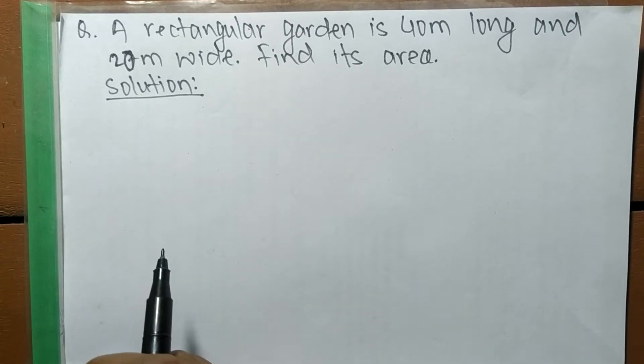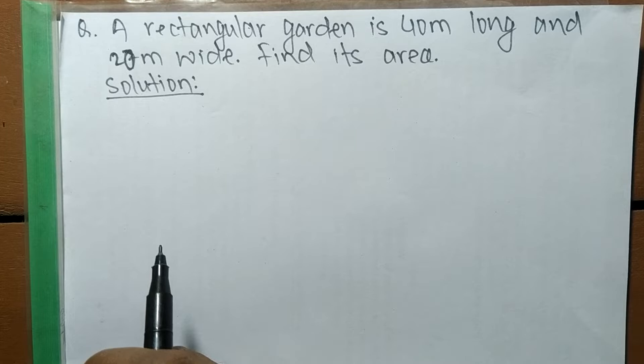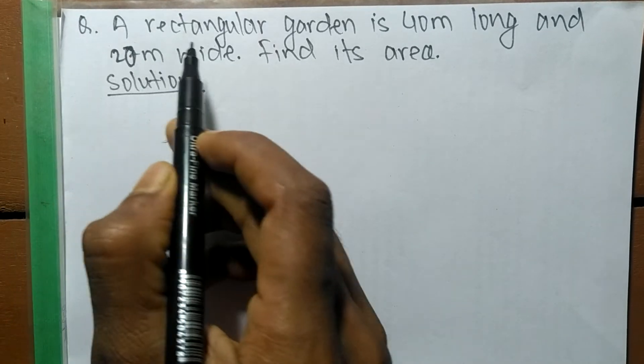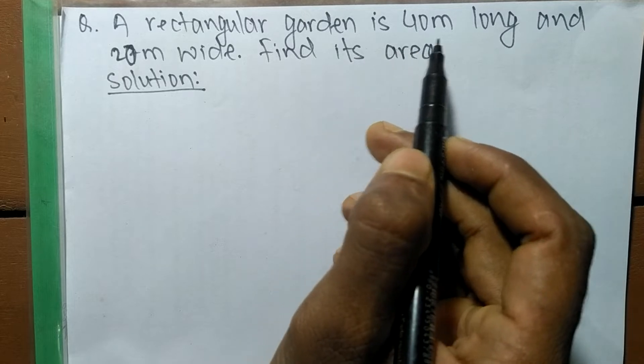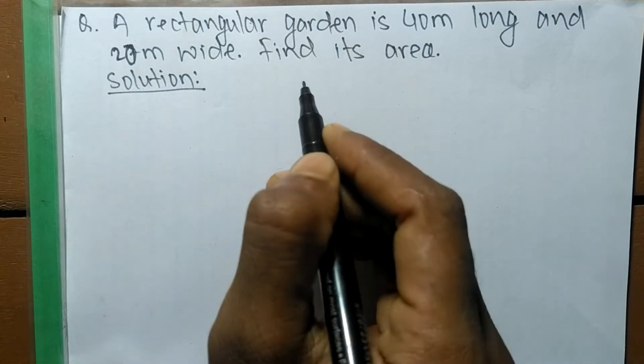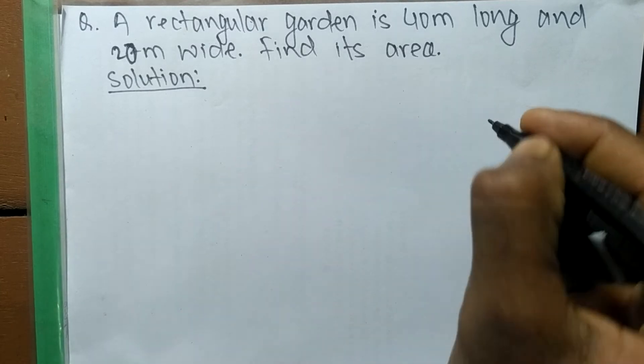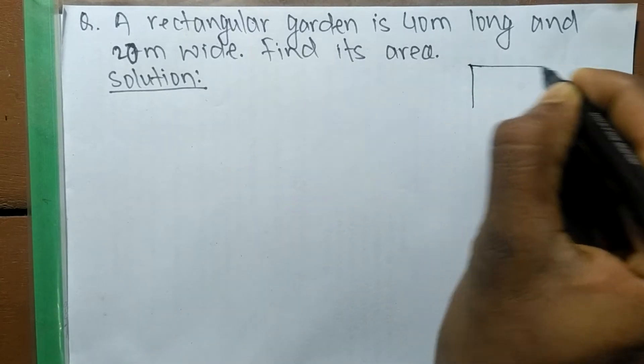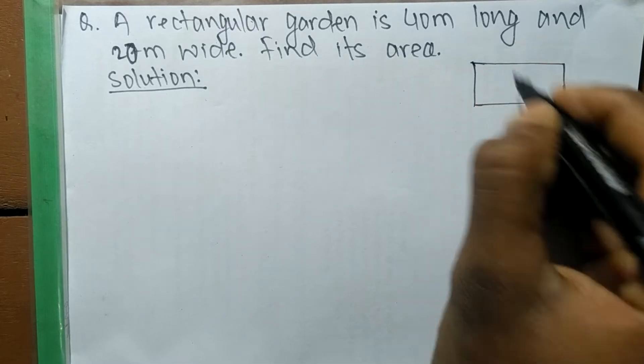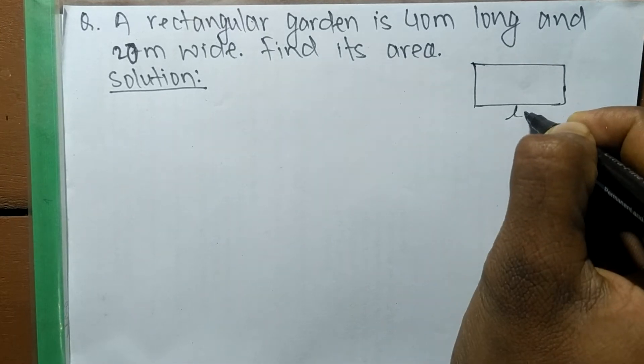Today in this video we are going to solve a mathematical problem. The problem is: a rectangular garden is 40 meter long and 20 meter wide, find its area.